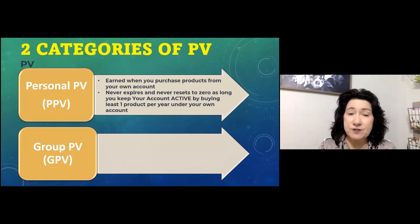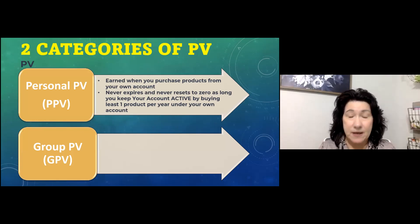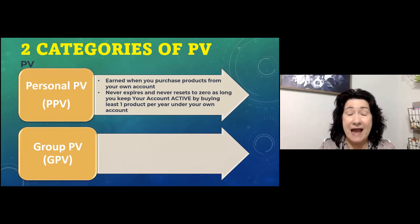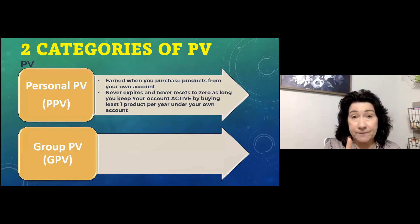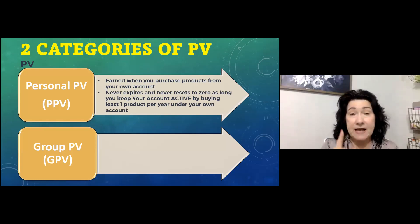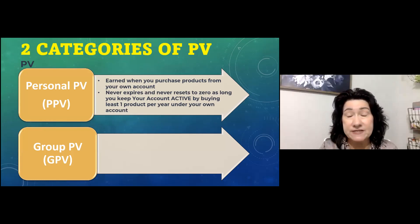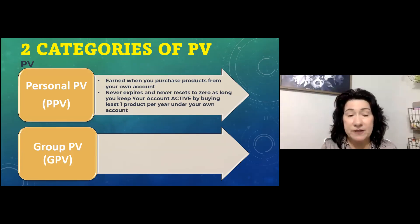Personal PV is earned when you purchase products under your own account. It never expires and never resets to zero as long as you keep your account active. How do you keep it active? By buying just one product a year — even a hand soap for $3.50. As long as you buy one product under your own ID every year, your account stays active and your personal point value accumulates.